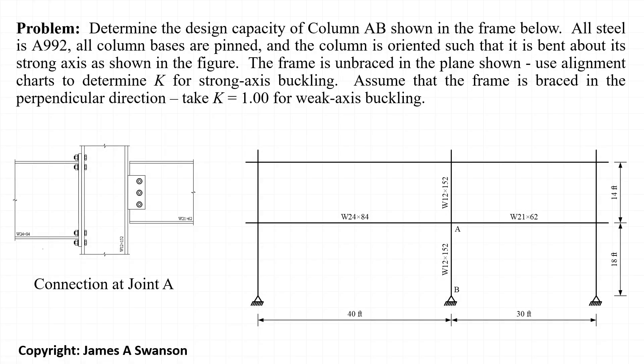The objective of this problem is to determine the design capacity of column AB shown in the frame below. All steel is A992, all column bases are pinned, and the column is oriented such that it is bent about its strong axis. The frame is unbraced in the plane shown, so we'll use alignment charts to determine k for strong axis buckling. However, we'll assume the frame is braced in the perpendicular direction and take k equal to 1 for weak axis buckling.